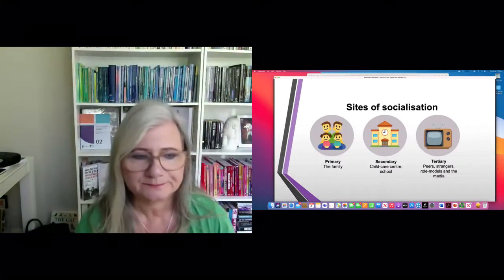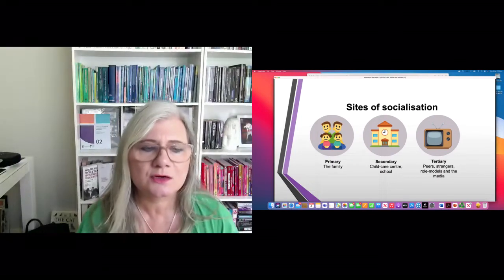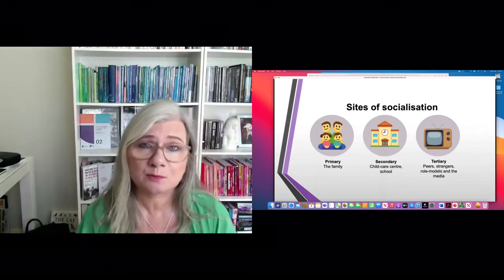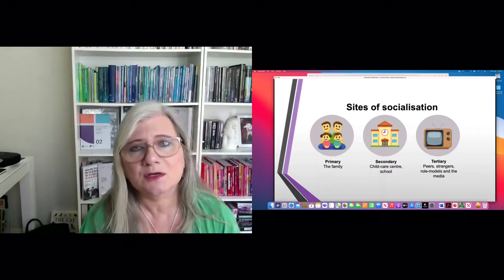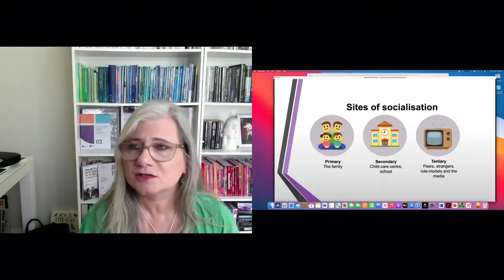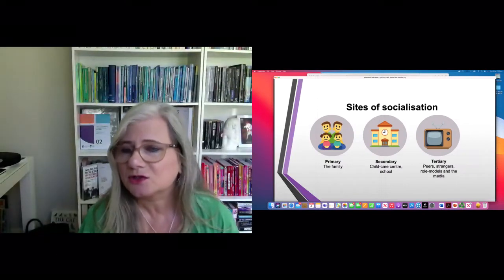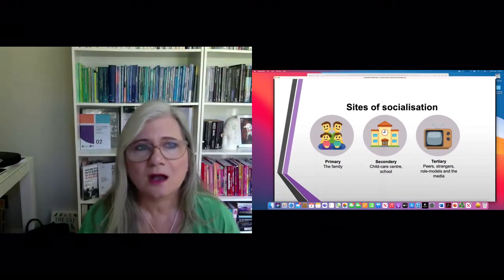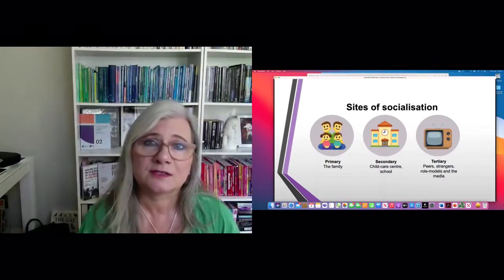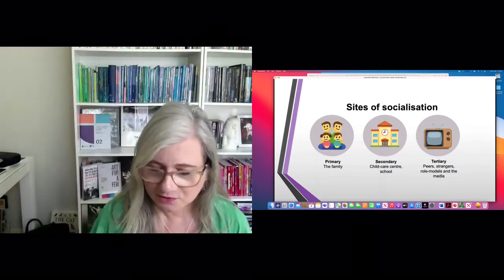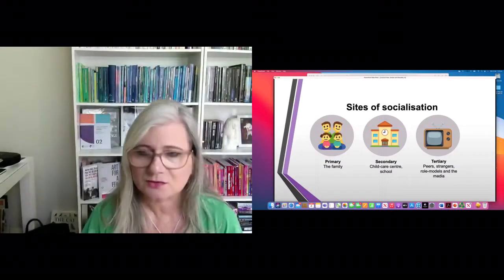There are different social sites in which socialization occurs. The primary site is the family, where we start learning gender roles very early. Secondary sites include childcare centers, nursery schools, primary and high school. Tertiary sites include peers, observation of others, various role models, and the media — which is a very important site of socialization, including both mainstream and social media.